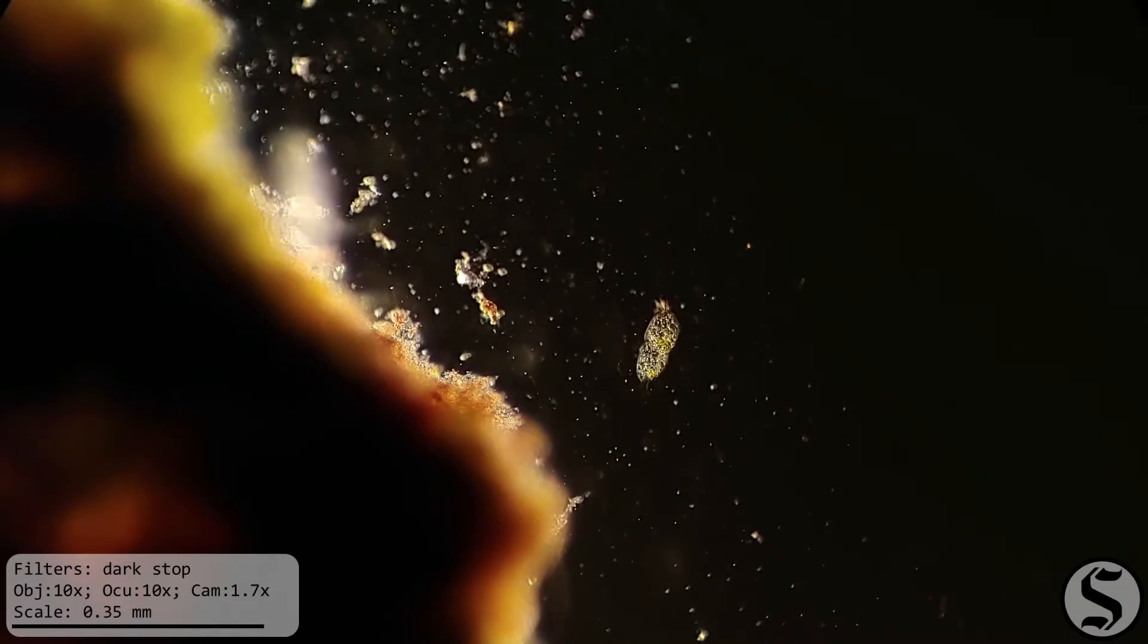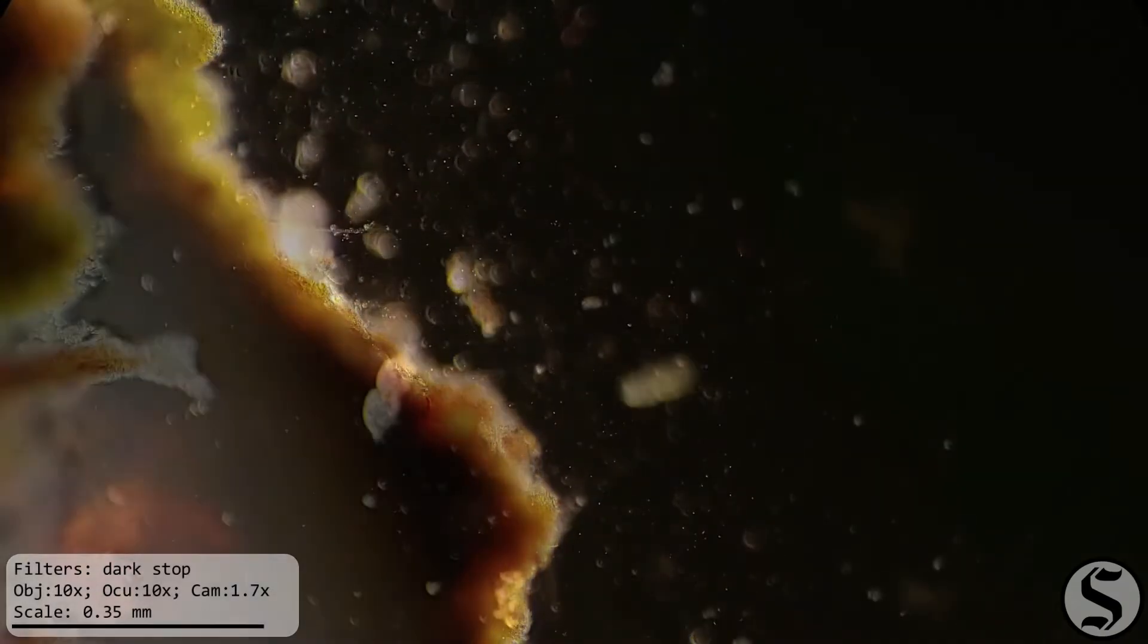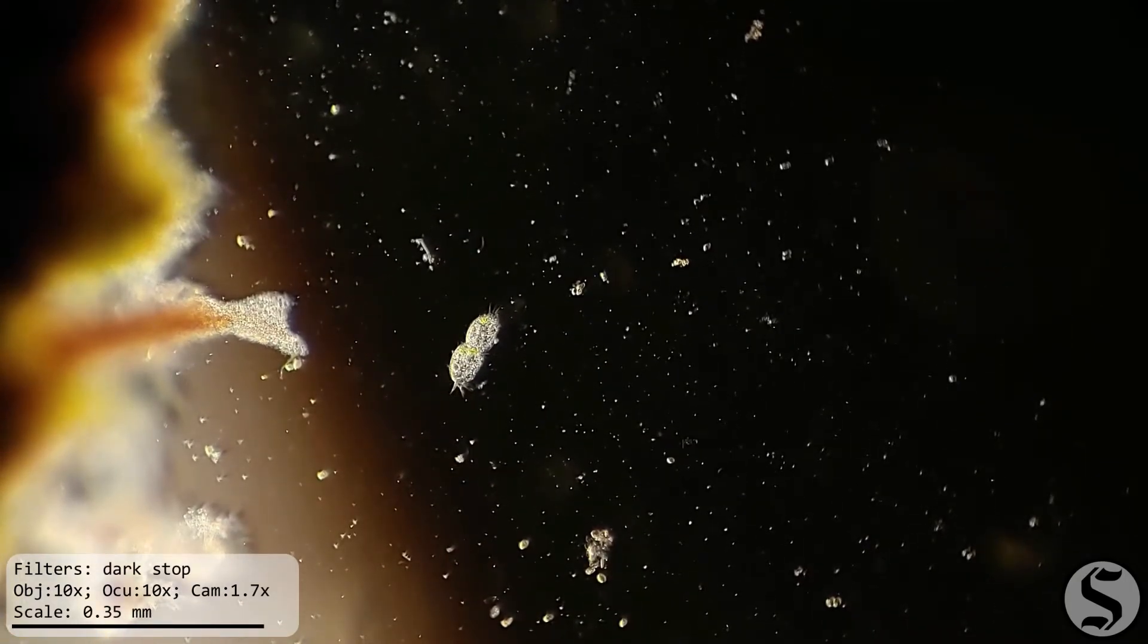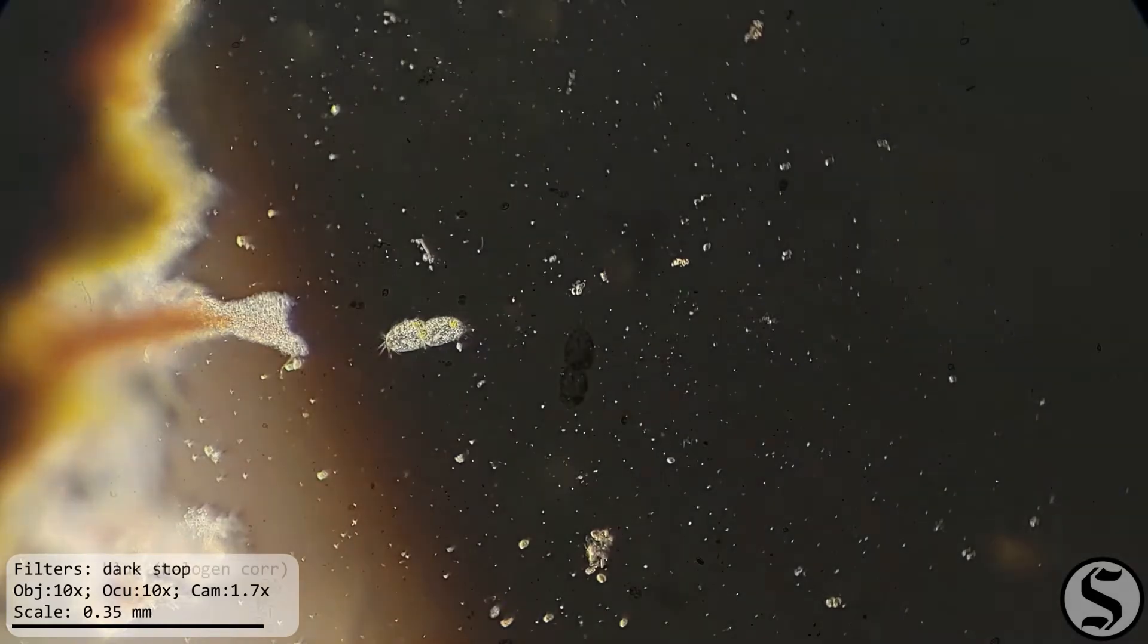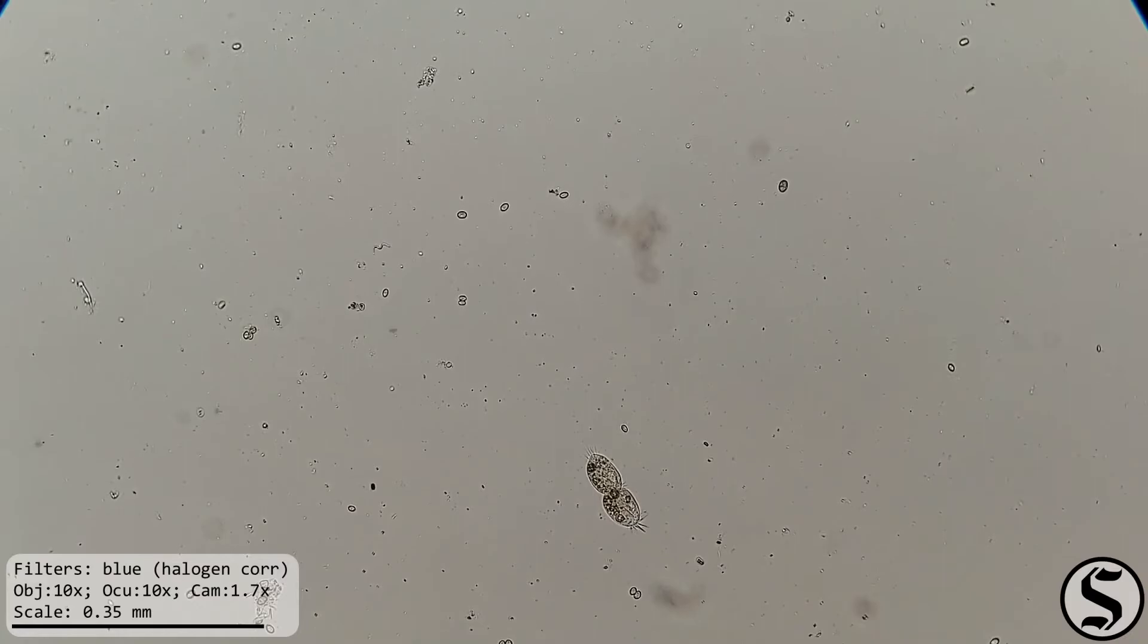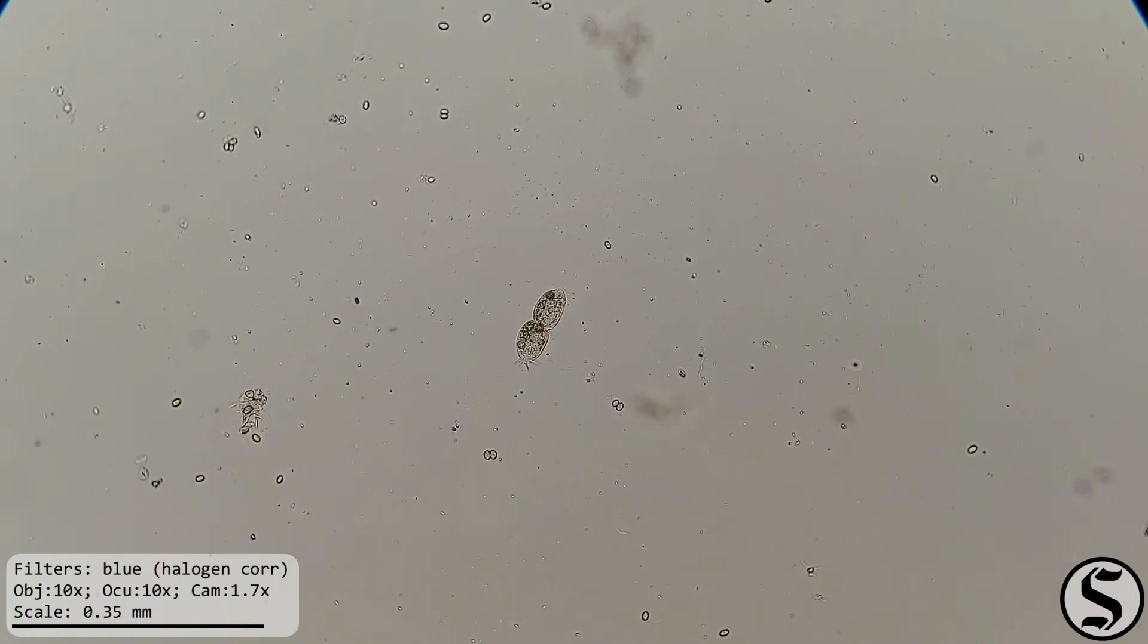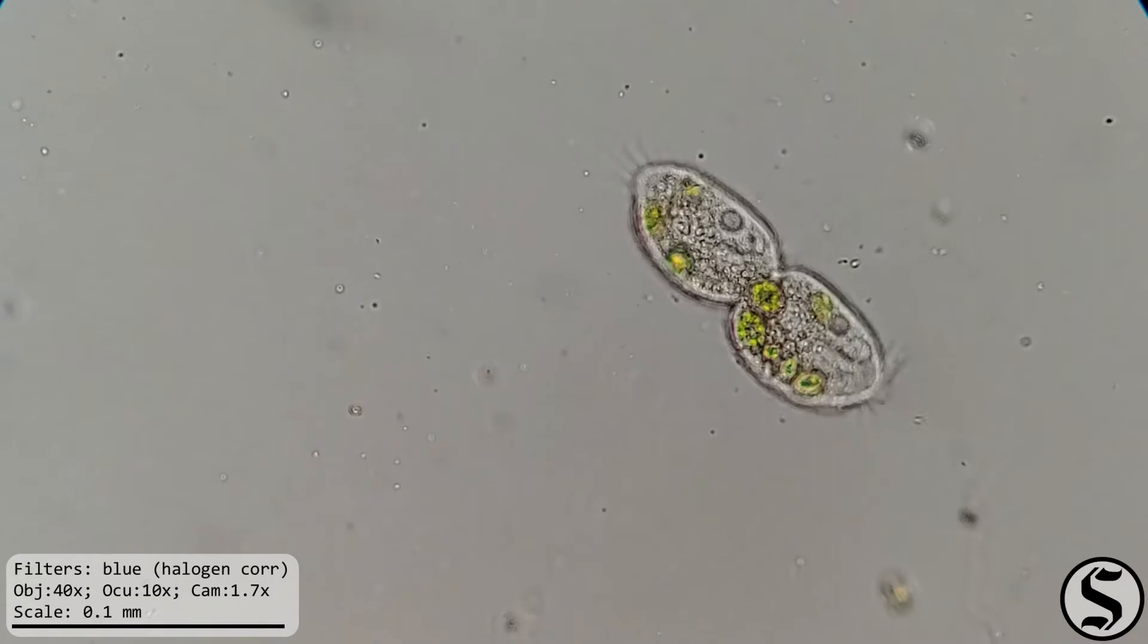So it was while I was in dark field that the real star of this show really snuck in. I noticed a hypotrix that had a little bit of a pinch in the middle of it, and it got me wondering if maybe it was going to consider dividing. So I switched to bright field again because the dark field you really have to set it up for each magnification, and bright field would allow me to switch between the magnifications a lot easier.